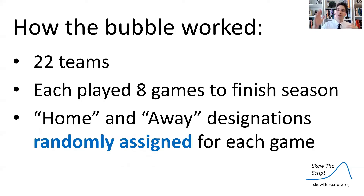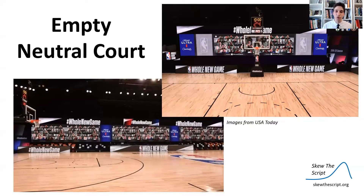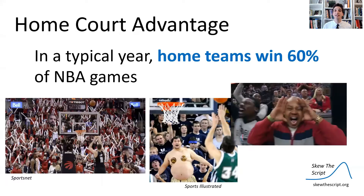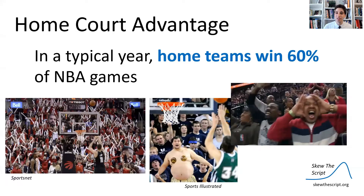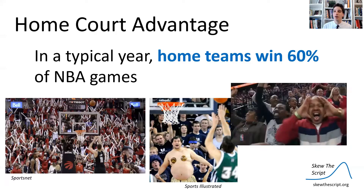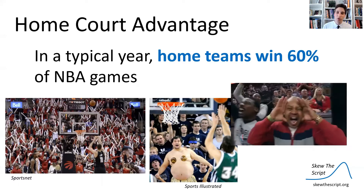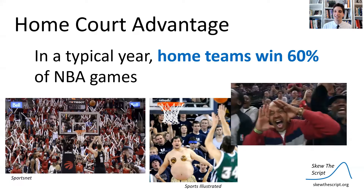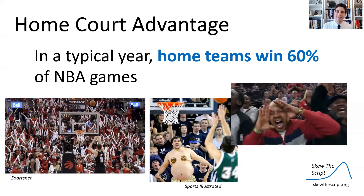They just kind of arbitrarily chose randomly home or away. They were playing on this empty neutral court — no logos for the home team, no screaming fans, and so you're randomly assigned to be the home or away team for your games. Now, normally in a typical season, the home teams win 60% of NBA games due to the home court advantage. If you have fans on your side rooting you on and trying to distract the other team, it tends to help you out. So on average, home teams win 60% of the time.